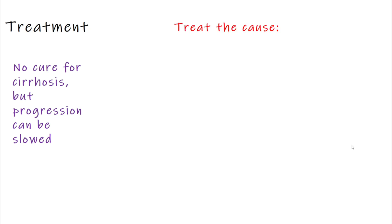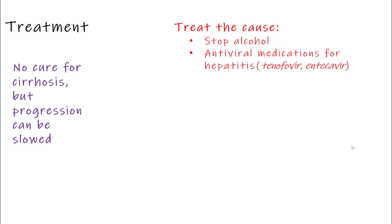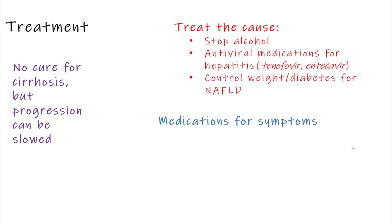Let's talk about how liver cirrhosis is treated. There is no complete cure, but the goal is to slow down the progression and manage symptoms. First, it is essential to treat the cause: stop drinking alcohol completely — this is crucial. If it is due to hepatitis B or C, doctors use antiviral medicines. If it is fatty liver, controlling weight, diabetes, and cholesterol is the key. Next, we focus on managing symptoms and complications with specific medications.